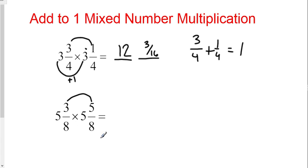You multiply the last times the last. Three eighths times five eighths is fifteen sixty-fourths. And then remember, you do the first times the first, but it's one more than the first. So it's five times one more than five is six. Five times six is thirty. Thirty and fifteen sixty-fourths is your answer.